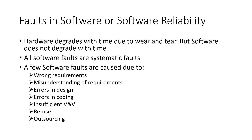A few software faults and their causes are listed here: incorrect requirements, wrong requirements, misunderstanding of requirements, or miscommunication of requirements. Other causes include errors in design, errors in coding, insufficient verification and validation activities, or reuse of code and outsourcing. If you outsource the project, you need to have a proper acceptance criteria set for your suppliers.